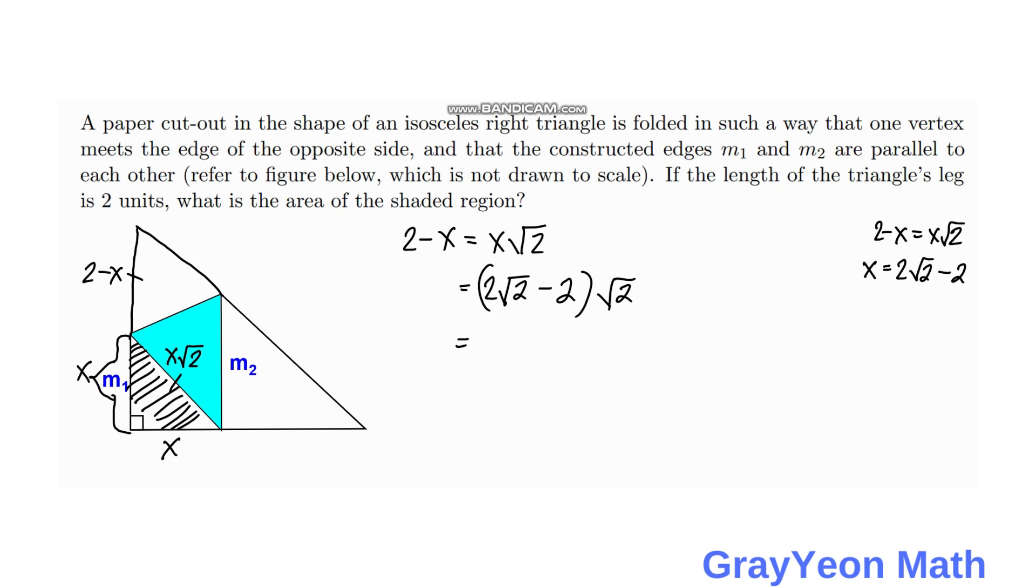Then we have 2√2 times √2 would be 4 minus 2√2. That is the value for 2 minus x.